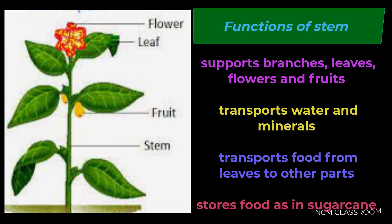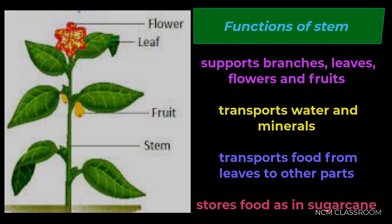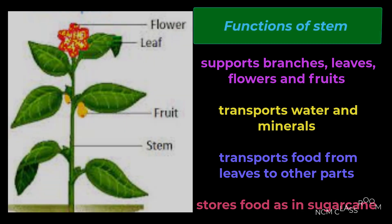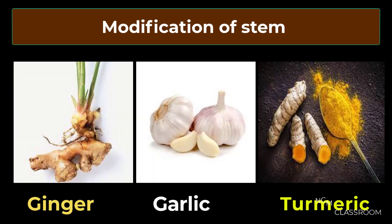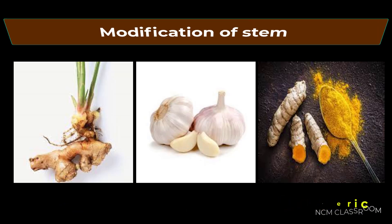Functions of stem: it supports branches, leaves, flowers and fruits. Stem transports water and minerals. Stem transports food from leaves to other parts. Stems store food as in sugarcane. Some of the modifications of stem we will see here: ginger, garlic, turmeric are the examples of stem modifications. They bulge in size due to the storage of food materials.